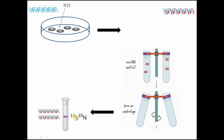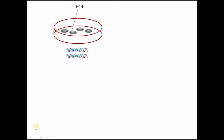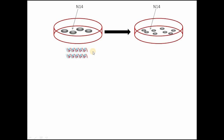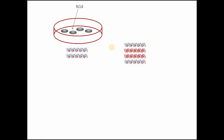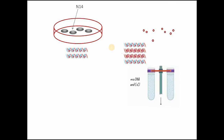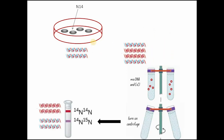This result indicated that the DNA strands contained both heavy N-15 and lighter N-14 nitrogen. In the next generation, E. coli continued growing in N-14 medium. After one more generation, DNA was extracted and spun again. This time, two bands were produced — one intermediate band and one lighter band near the top of the test tube.